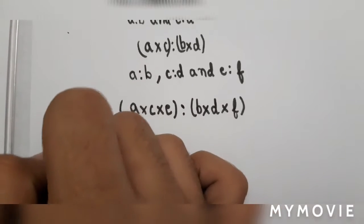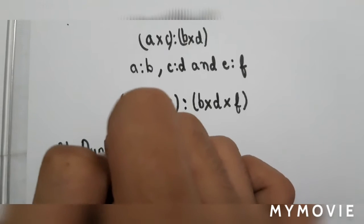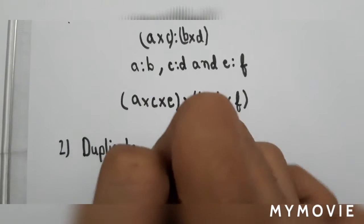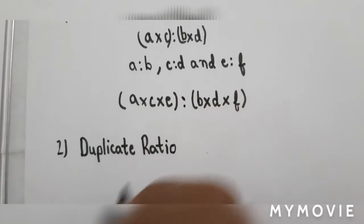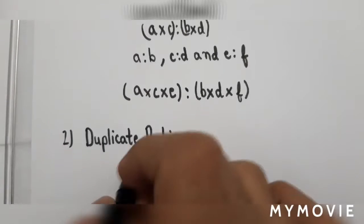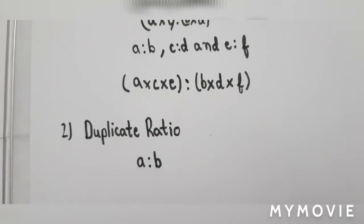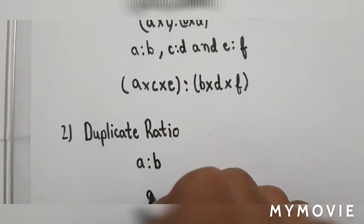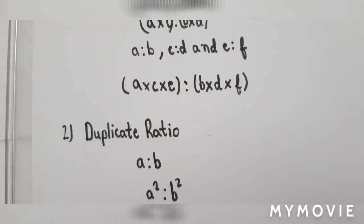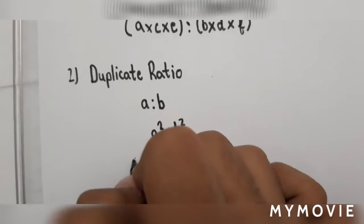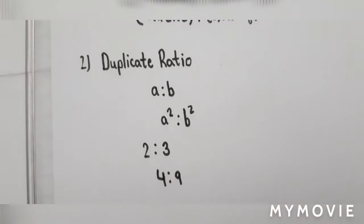Next comes duplicate ratio. In duplicate ratio, if you are provided A:B, then your answer would be the square of A and B — that is, A² : B². For example, if you are provided with 2:3, then your answer will be 4:9, because 2² is 4 and 3² is 9.